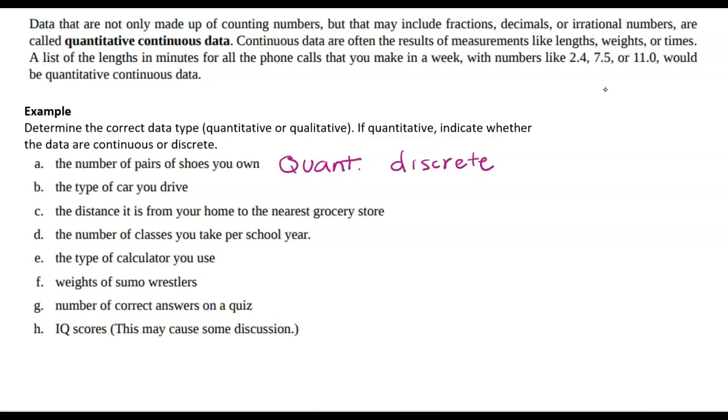If I wanted to collect the type of car you drive from everybody in the course, that would be qualitative. Part C, the distance from your home to the nearest grocery store. That's going to be quantitative. And since we're measuring, like with a ruler, or in this case probably bigger than a ruler, but since we can have decimals and it's more of a measurement, that's a continuous quantitative variable.